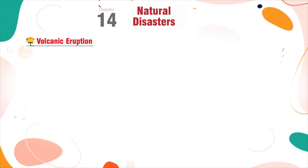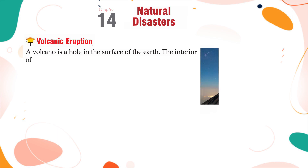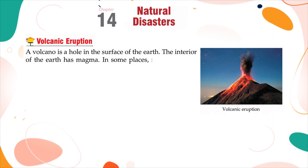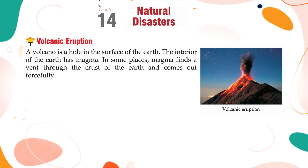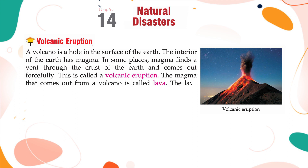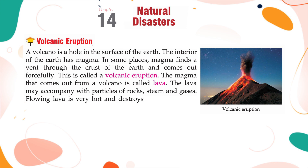Volcanic Eruption. A volcano is a hole in the surface of the earth. The interior of the earth has magma. In some places, magma finds a way through the crust of the earth and comes out forcefully — this is called a volcanic eruption. The magma that comes out from a volcano is called lava. Lava may be accompanied by particles of rocks, steam and gases. Flowing lava is very hot and destroys everything in its path.